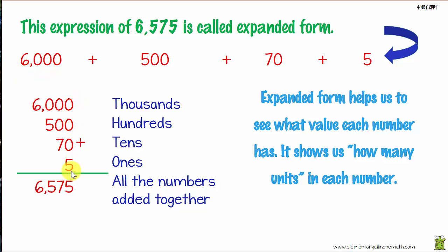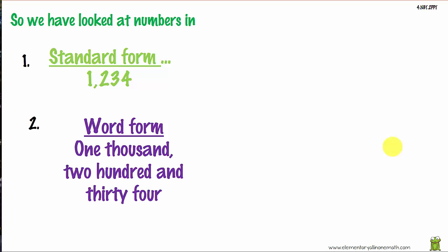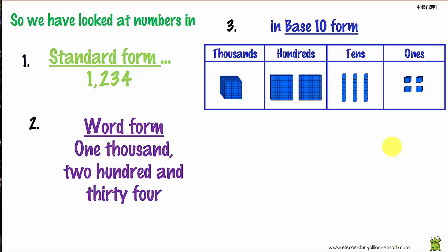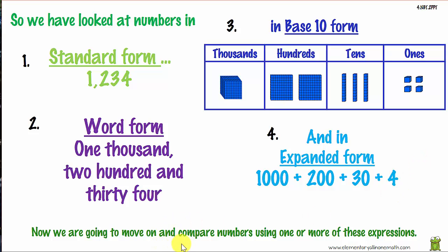When we add all these numbers together we come back to our original number of six thousand, five hundred and seventy-five. Expanded form helps us to see the value of each digit — it shows us how many units are in each place. So we have looked at numbers in standard form using digits, in word form using words, in base 10 form, and in expanded form. Now we're going to move on and compare numbers.